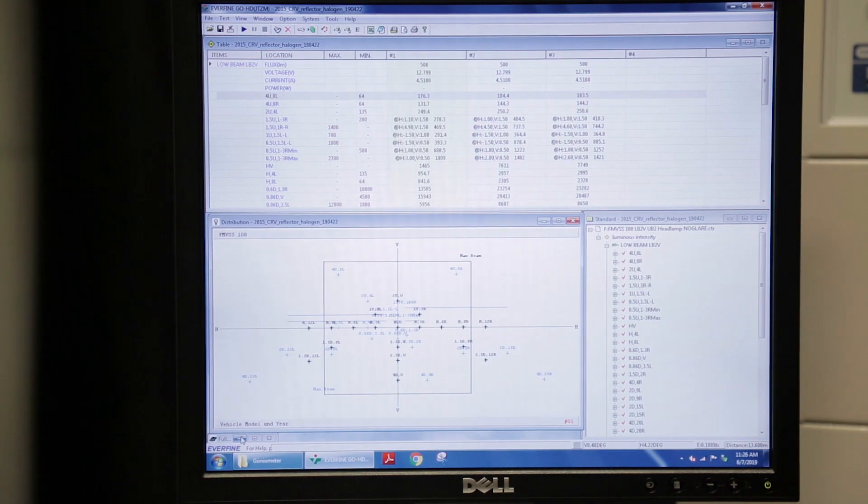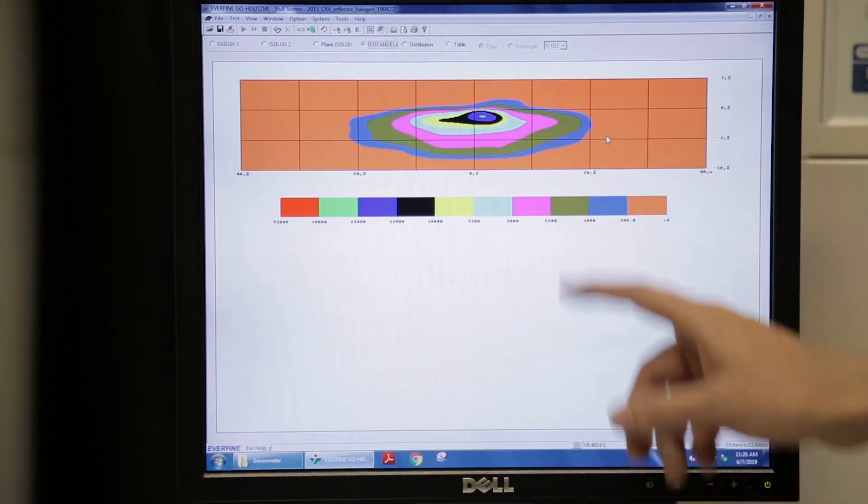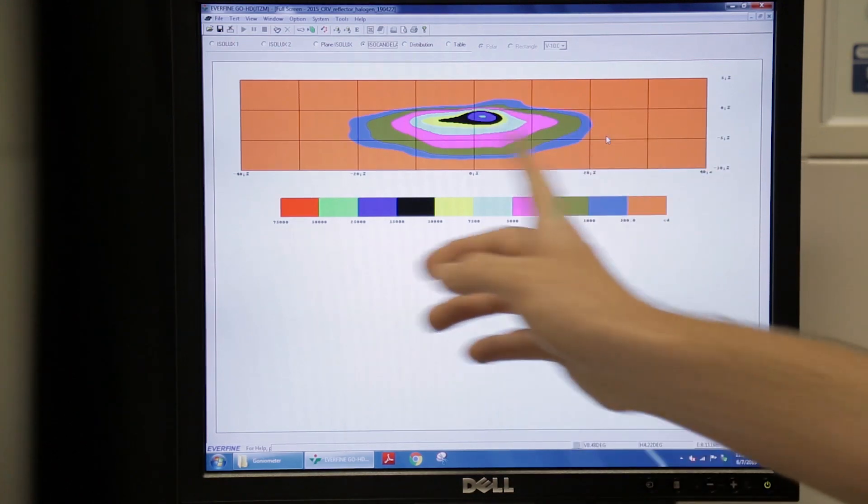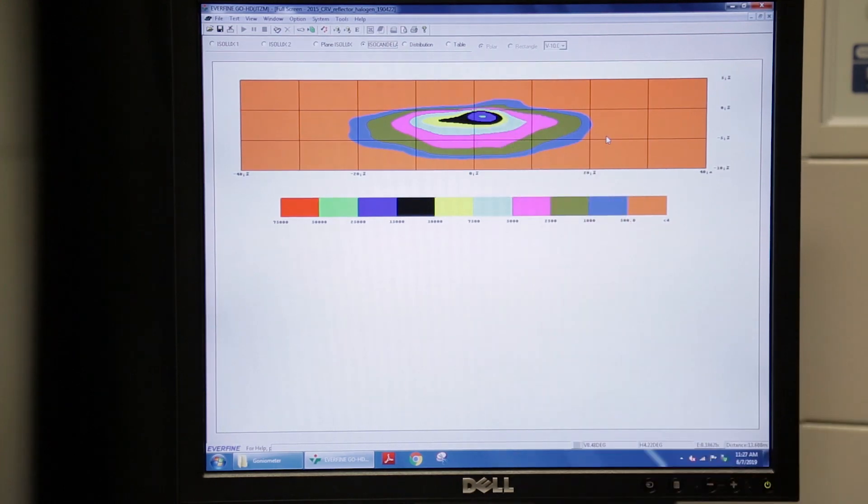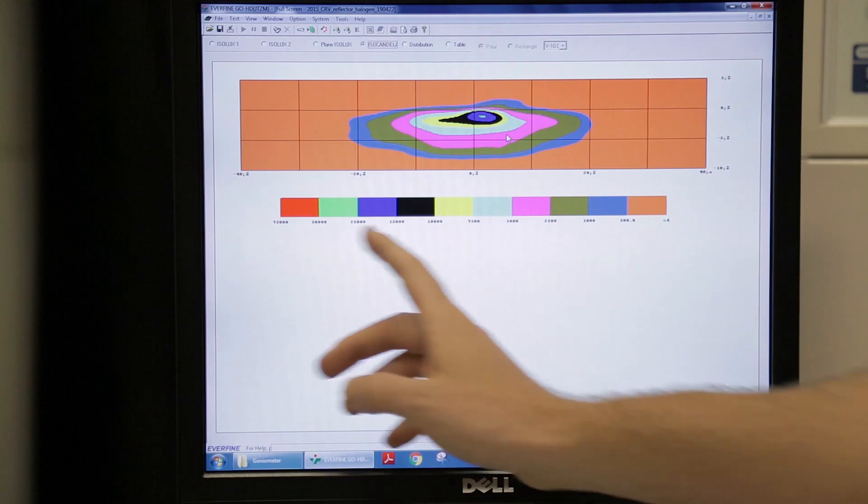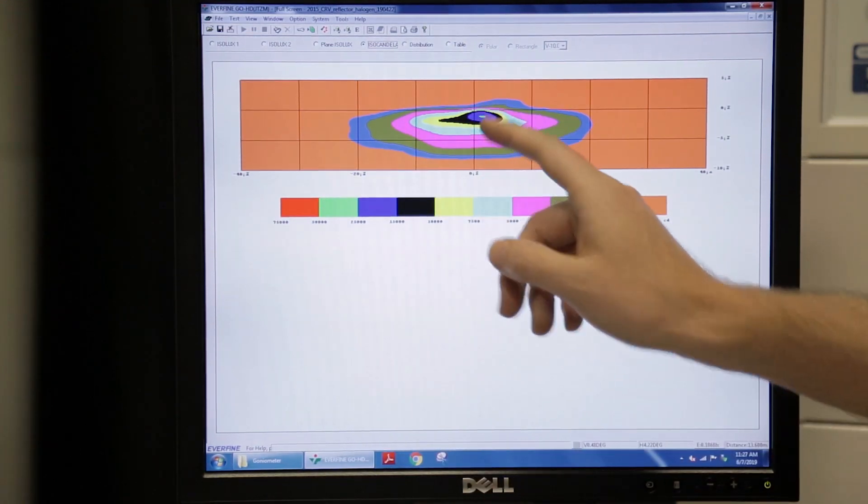Once we're sure that everything's aimed and shining properly to meet the requirements we can then look at the full beam pattern as well. So here's where we scanned across and you had thousands of points taken for these measurements so we can get an ISO candela chart showing from zero all the up to 75,000 candela with a color scale here where our output is.